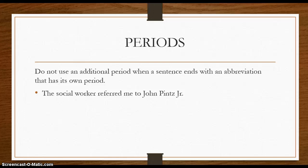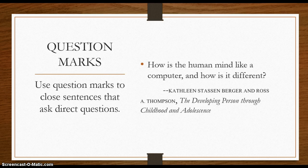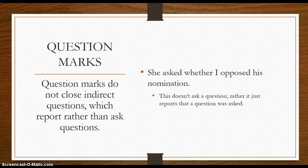Let's talk about question marks. Question marks close sentences that ask direct questions. For example, from research by Kathleen Stossenberger and Ross A. Thompson: "How is the human mind like a computer and how is it different?" Those are direct questions, so that sentence needs a question mark. Question marks do not close indirect questions, which report rather than ask questions — those end with a period. For example: "She asked whether I opposed his nomination" — it reports that a question was asked, so we use a period.